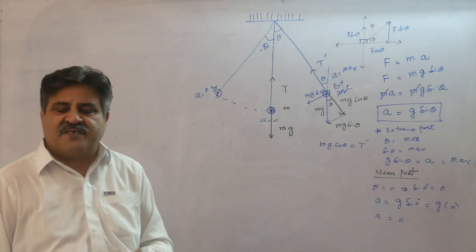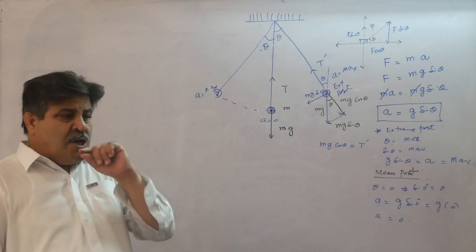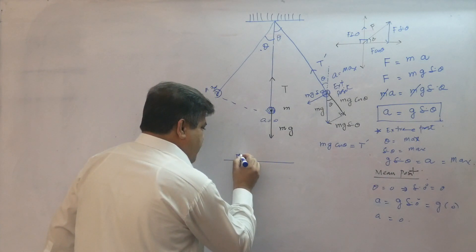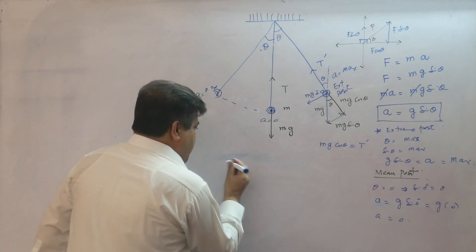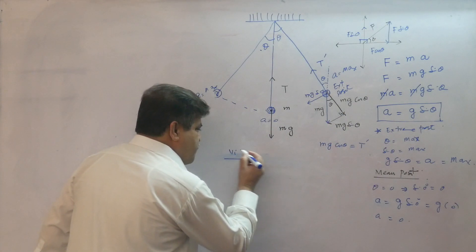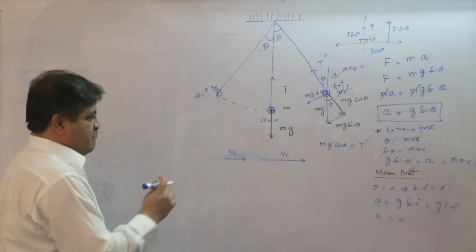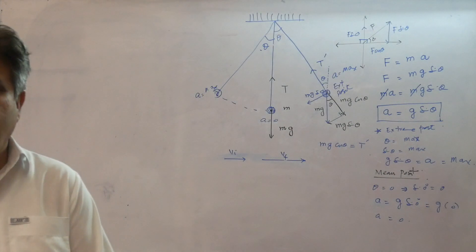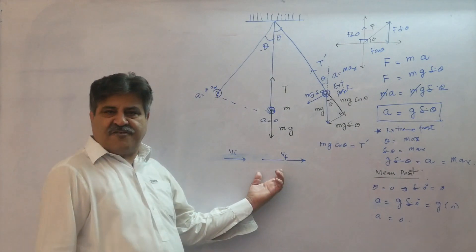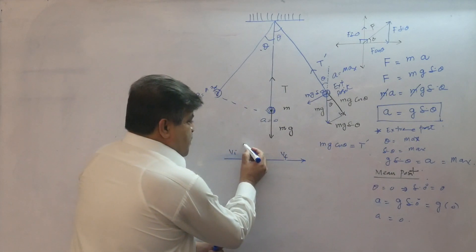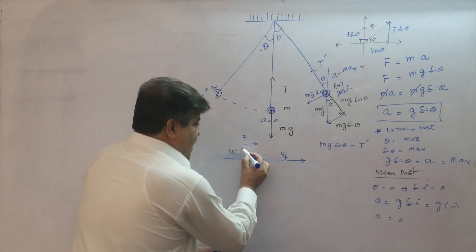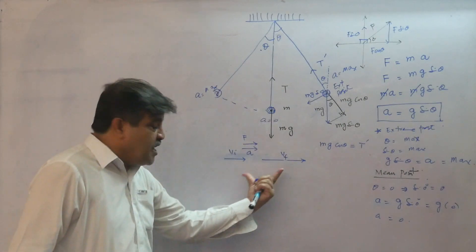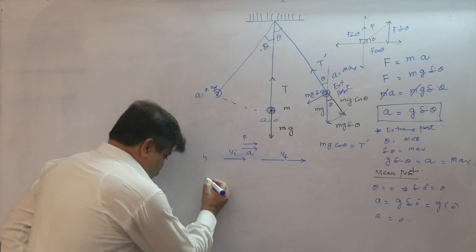Clarity of the basic concept of physics can help you out. You must know that if the initial velocity is smaller than the final velocity, it means the speed of the body is increasing. So the force must be towards the direction of the velocity, and the acceleration must always be towards the direction of motion of the body.